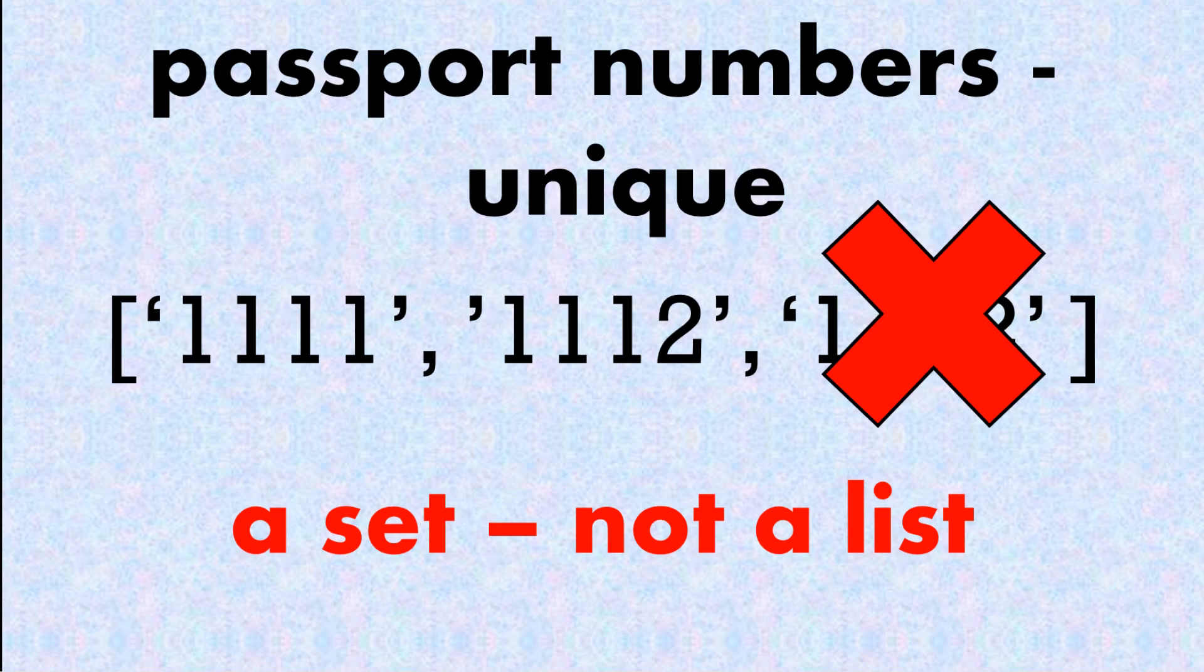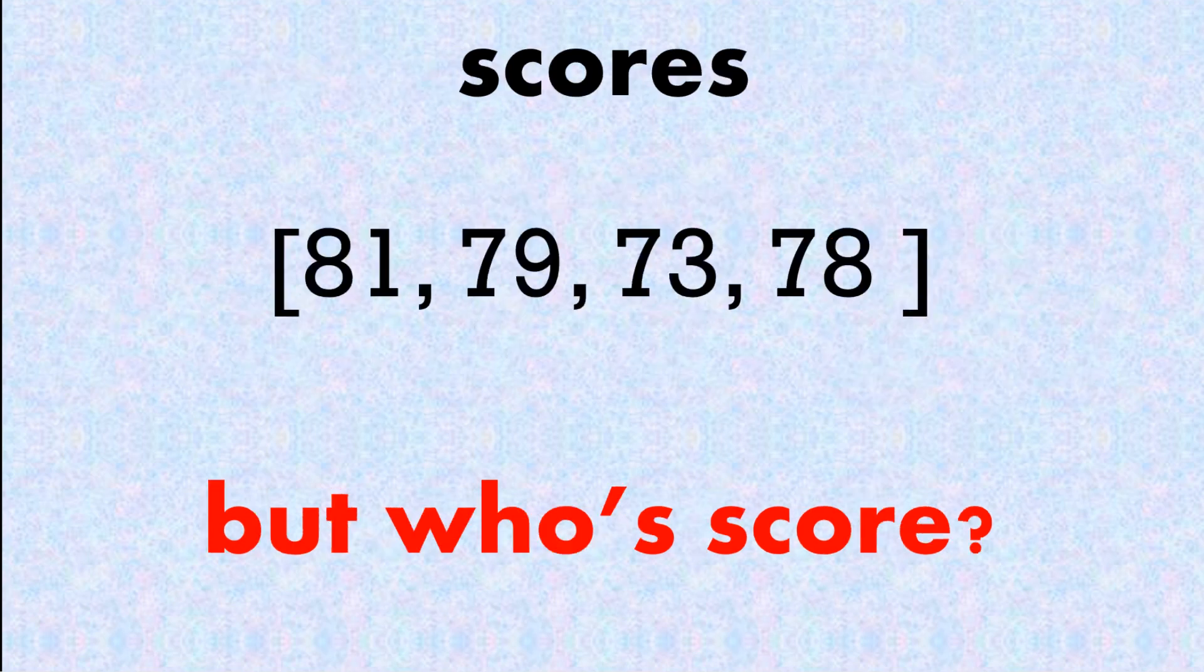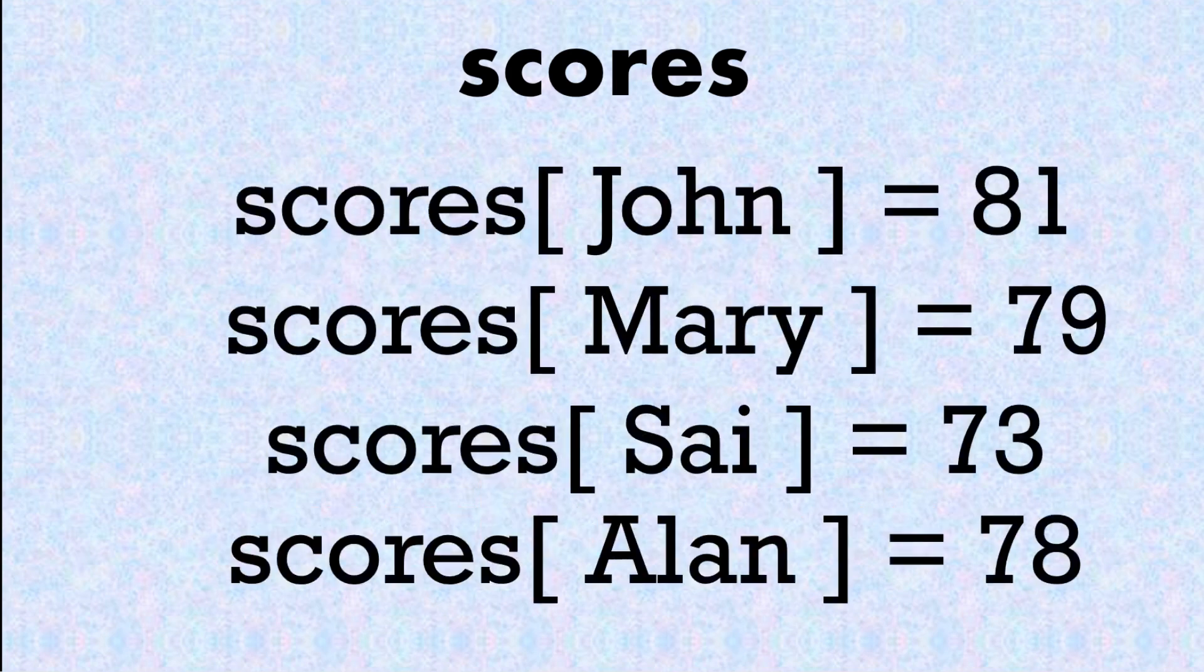Here's some scores: 81, 79, 73, and 78. But whose scores are they? So in this instance, we want the person's name who got the score, so we can use a dictionary called scores that has, if you like, a label with their name attached to the score. So you can remember we have a dictionary of scores.